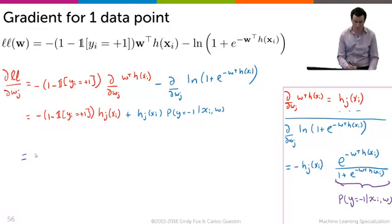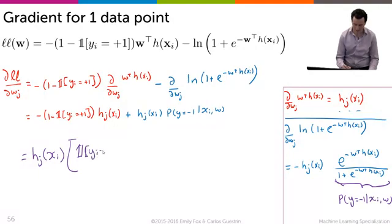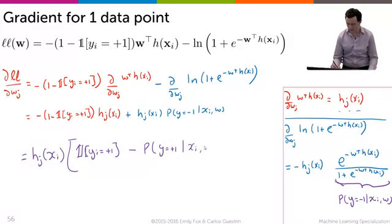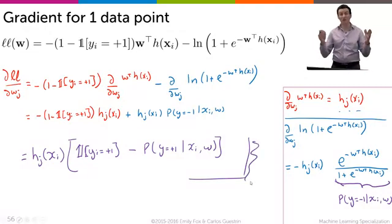But you'll end up with exactly what we're hoping for, which is the derivative of the log likelihood with respect to parameter j is simply h_j of x_i that multiplies the difference between the indicator that y_i is equal to plus 1 - so it's a positive example - minus the probability that y is equal to plus 1, given the input x_i and the parameter is w. And this is exactly what I showed you earlier as what the answer was.